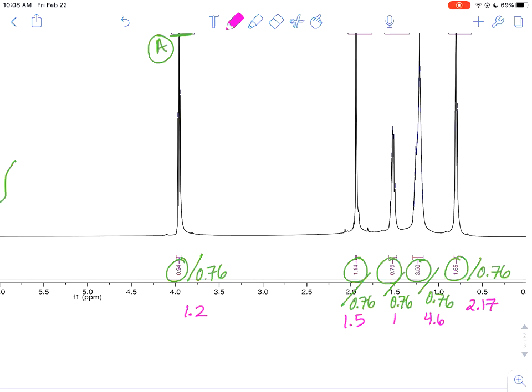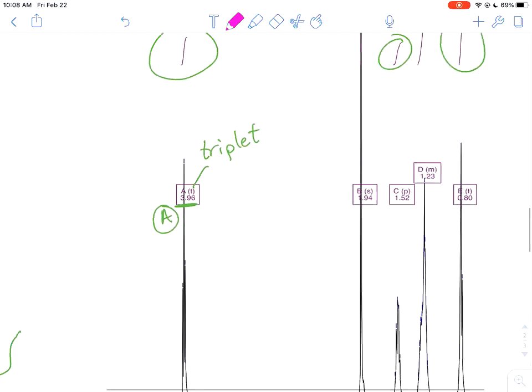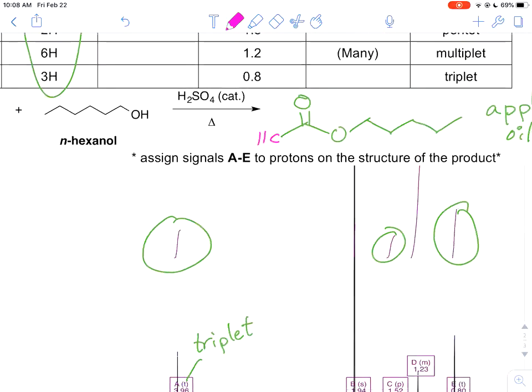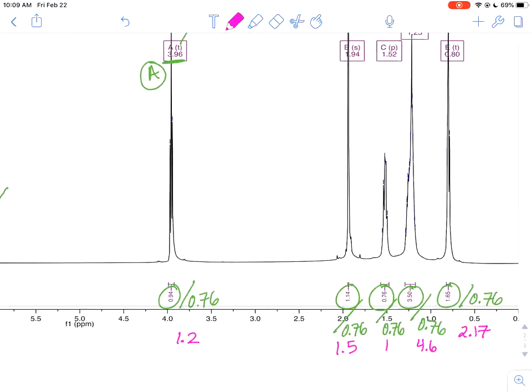So I went ahead and divided each of those integration values that are provided by 0.76. And we can see that we're starting to get somewhere near the number of protons that we're expecting in the molecule. If we take a look at our structure, however, I'm just going to draw on these. We have a CH3 group, we have a CH2 group, actually we have a bunch of CH2 groups, another CH3 group. So there's actually no CH groups that we're expecting. We're not expecting a one hydrogen signal. So I'm going to go ahead and multiply all of these by two. And we're starting to get a little bit closer to what we're expecting.